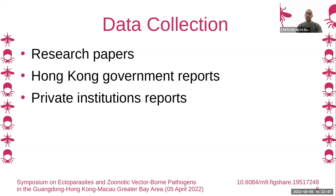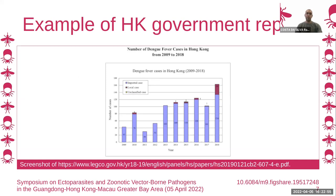Let's look at an example of a Hong Kong government report with dengue fever case data. This is a screenshot of one of the documents. It's in PDF format and has a plot of dengue fever cases from 2009 to 2018. The challenge is that all the data is already in the form of a chart, and the student would have to manually extract all the raw information — which is very time-consuming and error-prone.